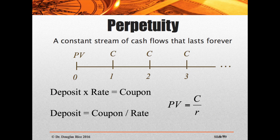That's a very simple formula — you can think of it as a bank account. If you put $100 in the bank at 10% interest, you're going to get 10% back every year. Unless you compound your money, if you keep withdrawing it, you'll end up with the same constant amount. So in a perpetuity, the deposit times the rate equals the coupon. Rearranging algebraically, if we divide by rate, the present value equals the coupon divided by the rate.